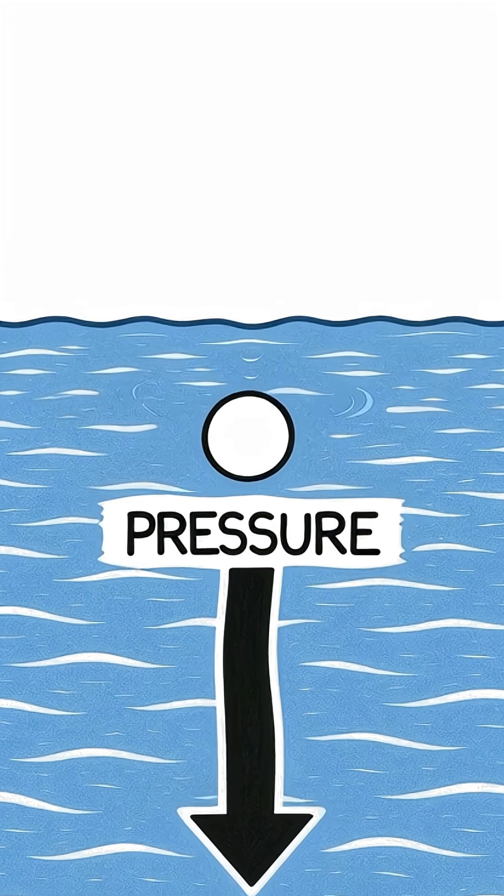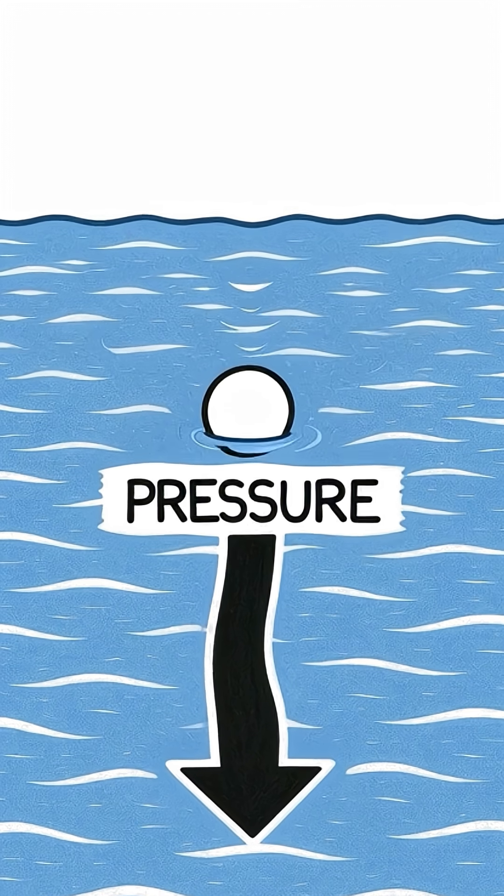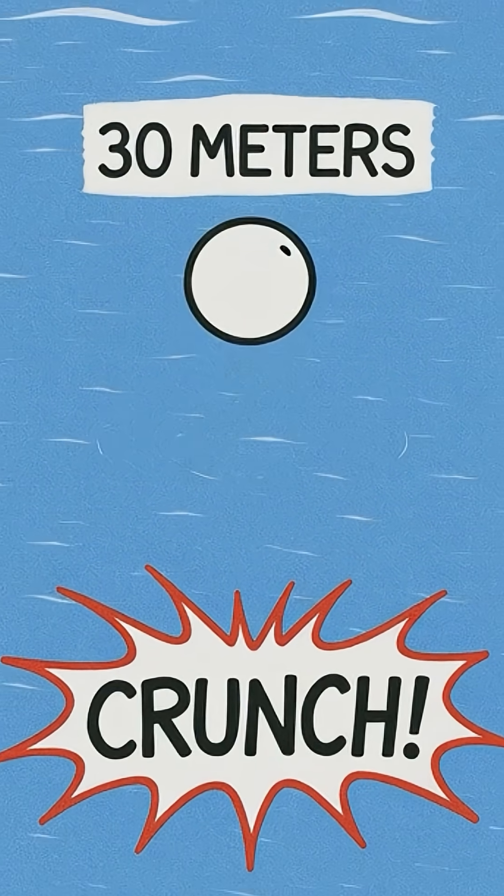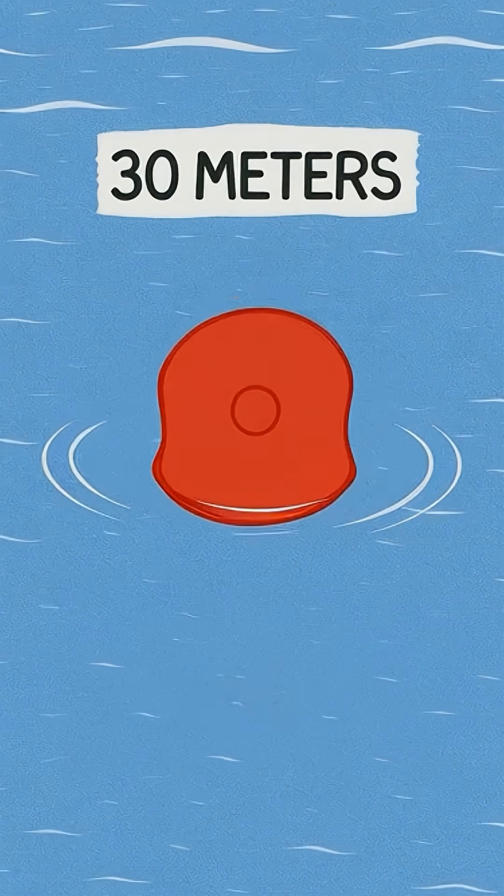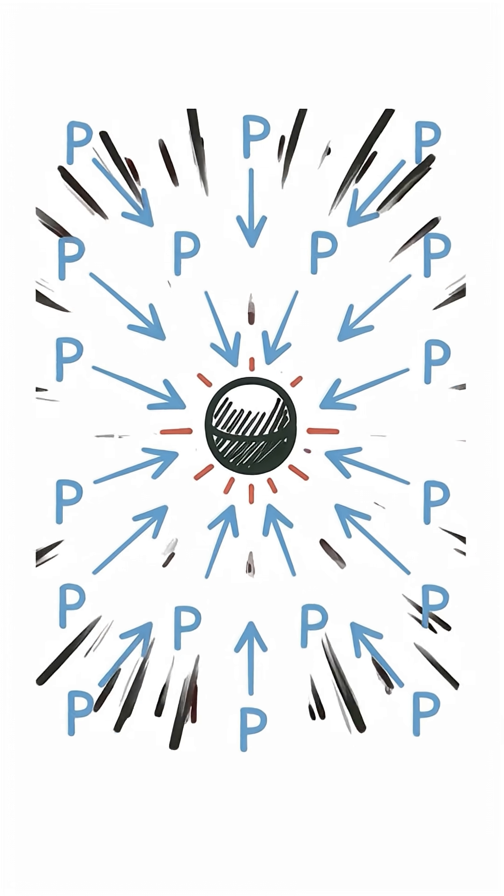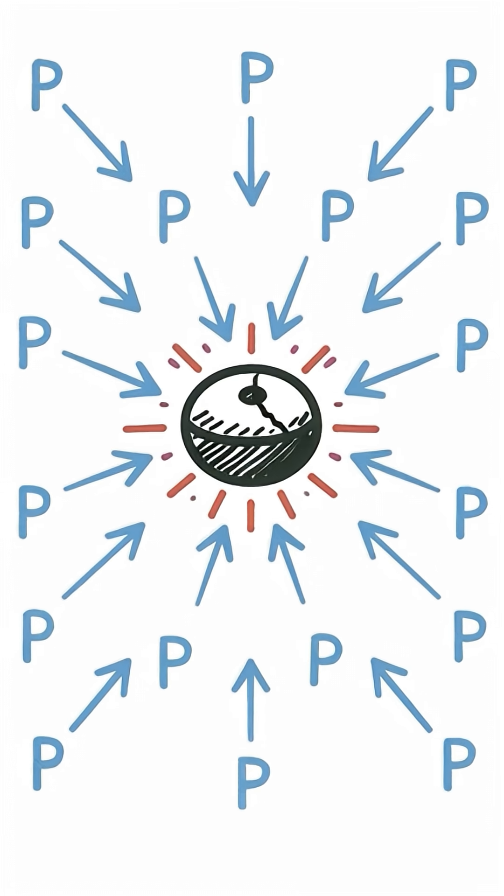But there's a problem: pressure. Every meter of water adds one atmosphere of pressure. A ping-pong ball is essentially a hollow plastic sphere with thin walls. It only takes 30 meters of depth. At this depth, external pressure instantly exceeds internal pressure.